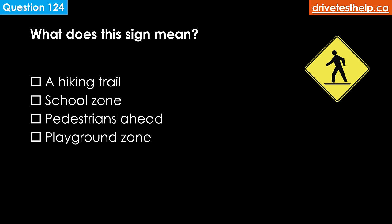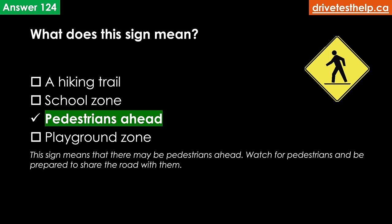What does this sign mean? Options: a hiking trail; school zone; pedestrians ahead; playground zone. The correct answer is pedestrians ahead. This sign means that there may be pedestrians ahead — watch for pedestrians and be prepared to share the road with them.